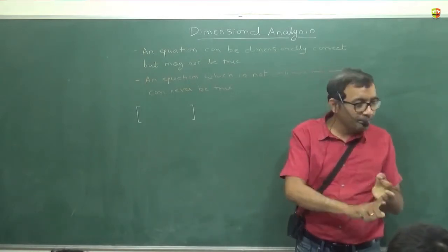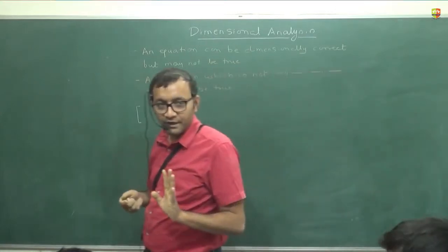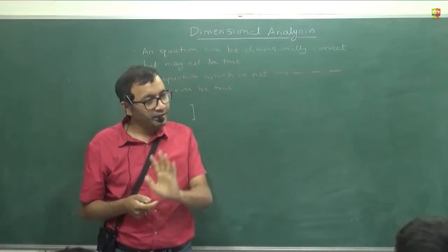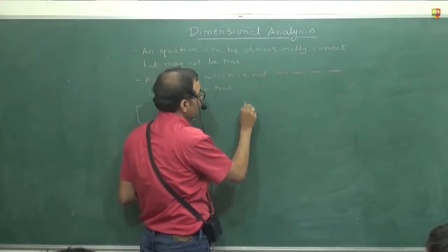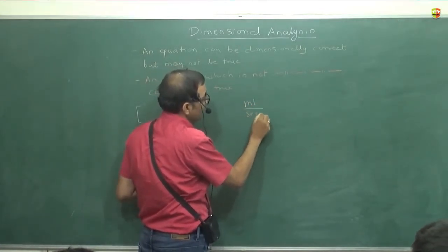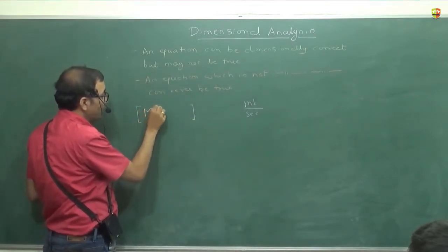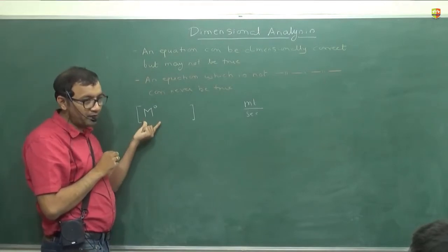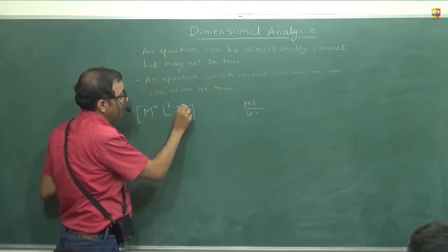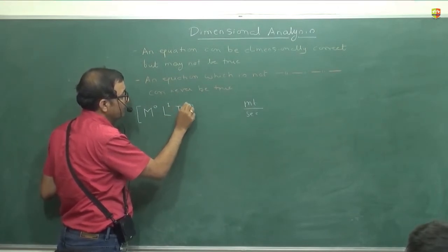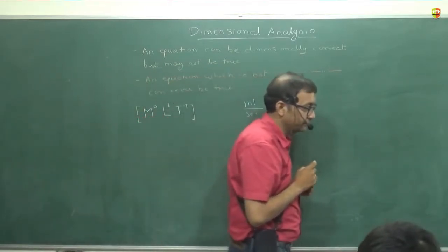But since in our class 11th, entire 11th is about more or less mechanics itself. So we are using only the dimensions which are defining the mechanics. Which are about mass, length and time only. Okay? But it doesn't matter, it doesn't mean that only three dimensions you have to write. Suppose I bring in, you know, magnetism or current. Then you have to use ampere also. Okay? But right now we just need three dimensions. Which are mass, length and time.